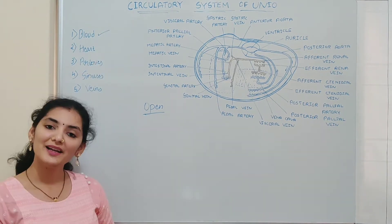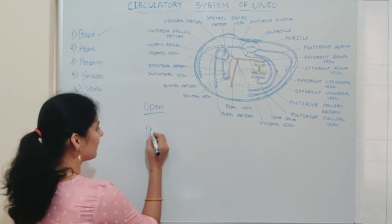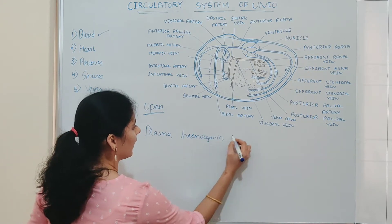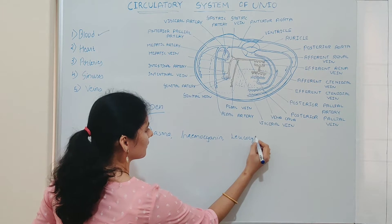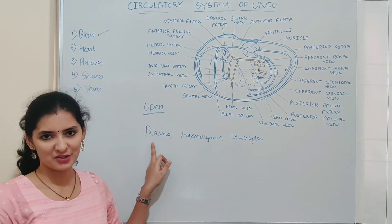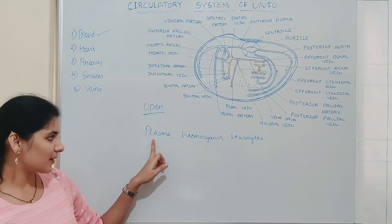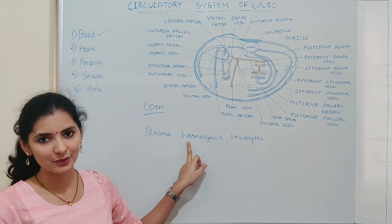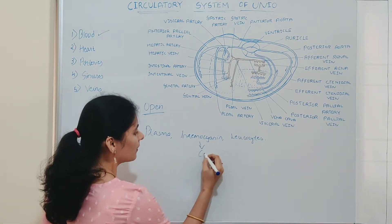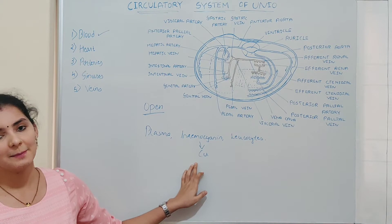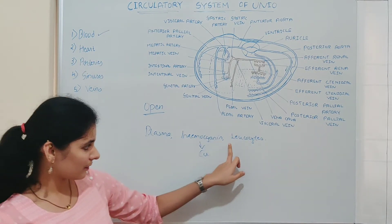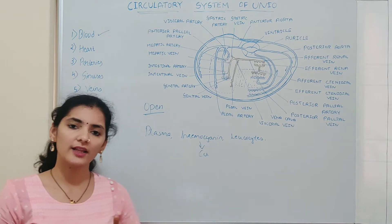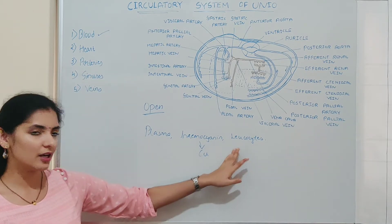The first component is blood. Blood in the case of Unio is mainly made up of three components: plasma, hemocyanin, and leukocytes. Plasma is the main component of blood and it is colorless in nature, consisting of hemocyanin and leukocytes. Hemocyanin is a respiratory pigment in Unio and contains copper, which imparts a faint blue coloration to the blood. The plasma also consists of numerous amoeboid cells or leukocytes, and both granular and agranular types of leukocytes are present.